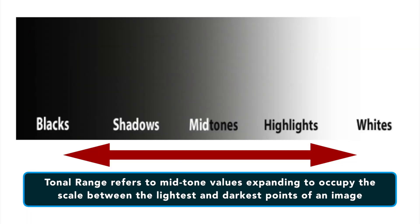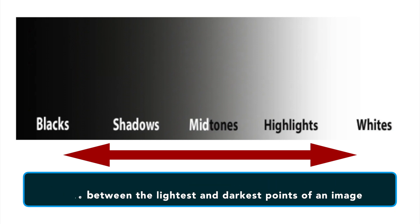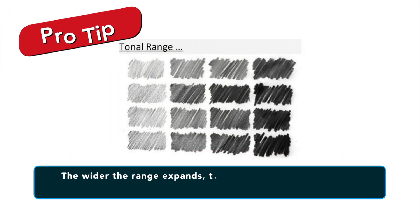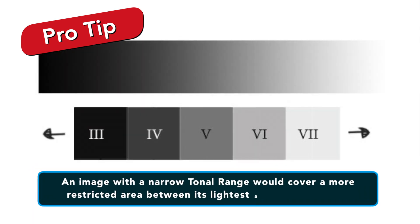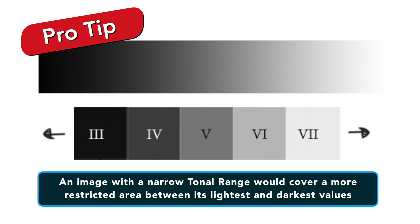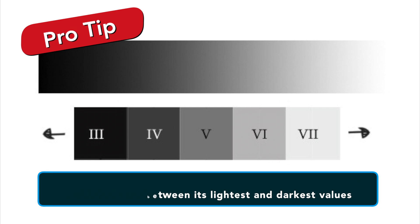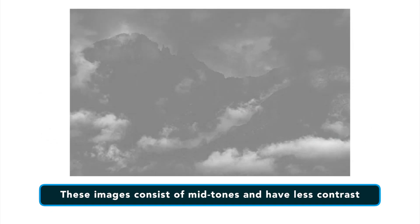In photography, tonal range refers to mid-tone values expanding to occupy the scale between the lightest and darkest points of an image. The wider the range expands, the more contrast there is and the more mid-tone values would be represented in the image. An image with a narrow tonal range would cover a more restricted area between its lightest and darkest values, thus mainly consisting of mid-tones and in turn having less contrast.